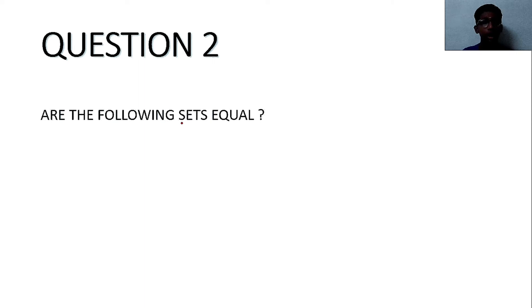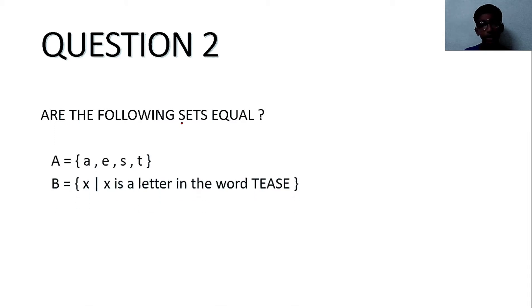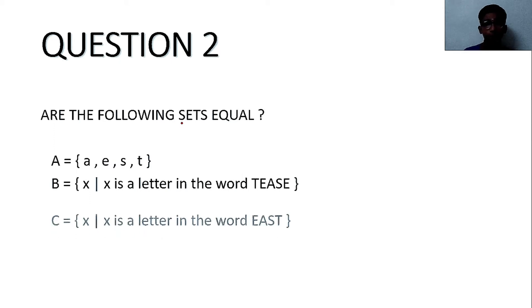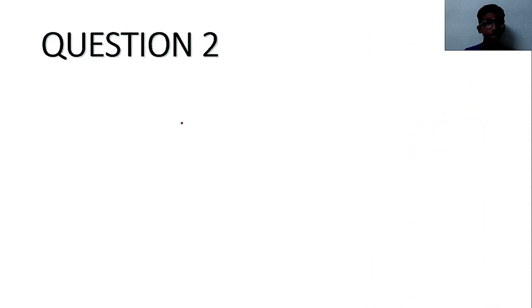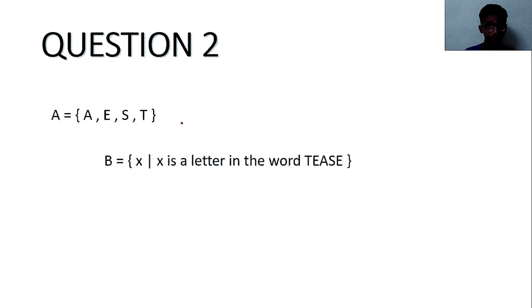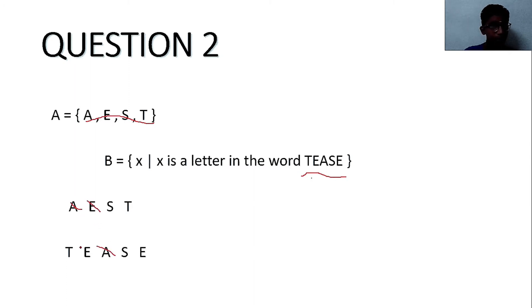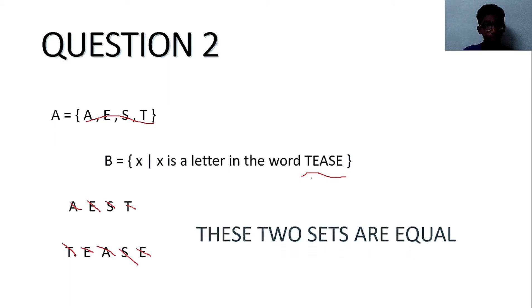Let's see the second question: determine whether the following sets are equal. A = {A, E, S, T}, B = {x | x is the letter in the word 'peace'}, C = {x | x is the letter in the word 'east'}. We take sets A and B and write out their elements. Cross-checking: A and A, E and E, S and S, T and T — no other alphabets appear, so these two sets are equal.